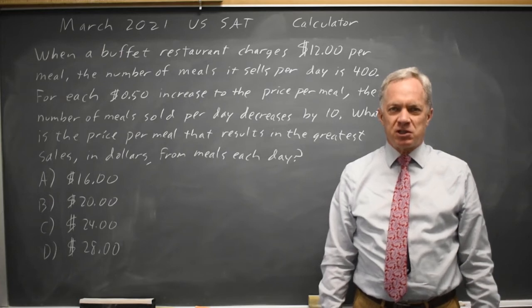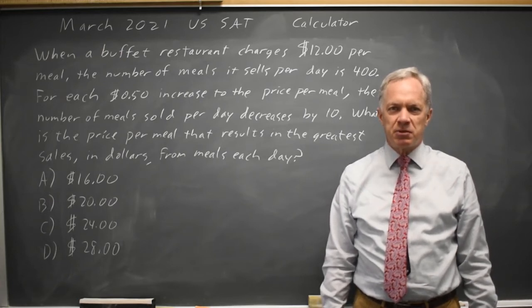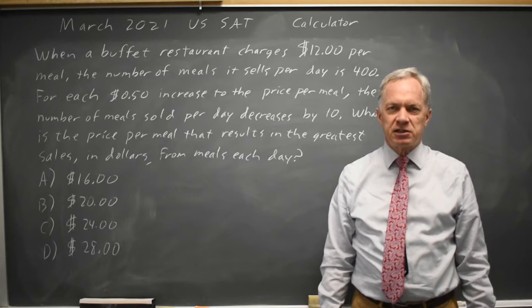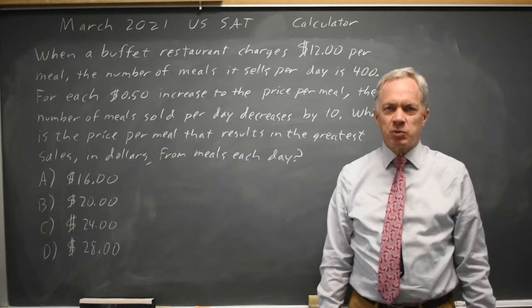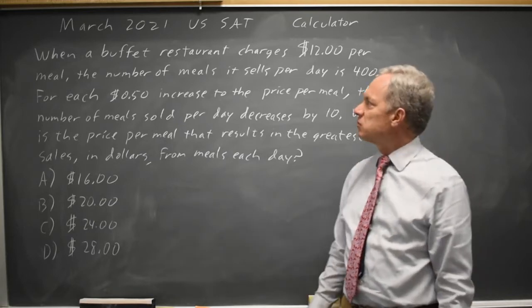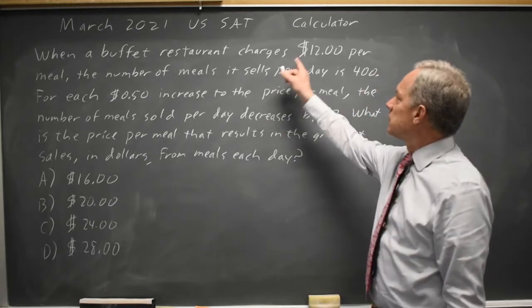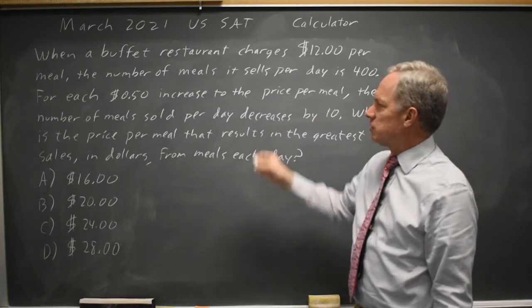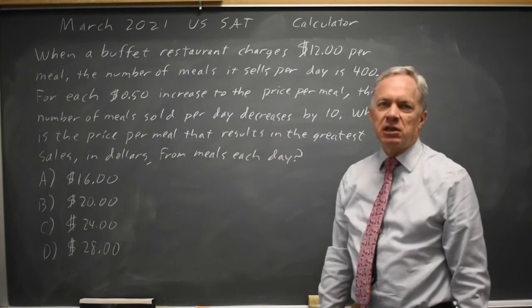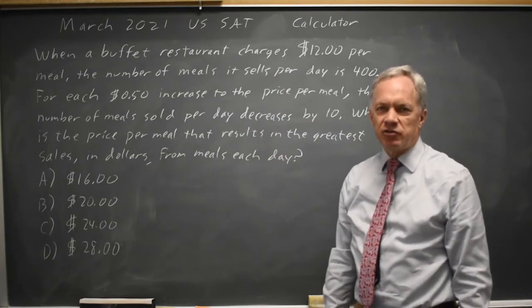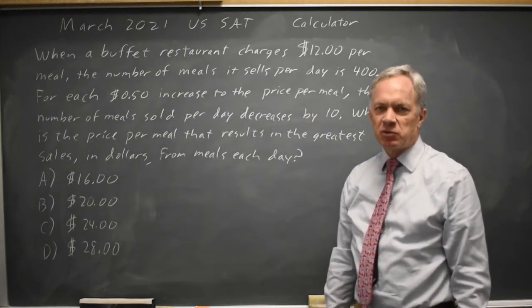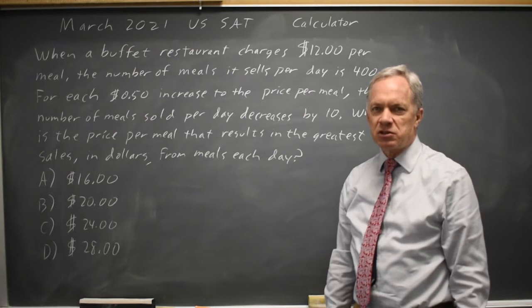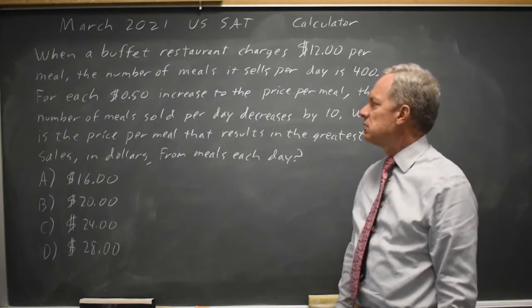I'm Dr. Roger and this question is from the March 2021 U.S. exam calculator section. College Board describes a restaurant that at $12 per meal sells 400 meals, and for each additional 50 cents on the price, the number of meals sold goes down by 10.